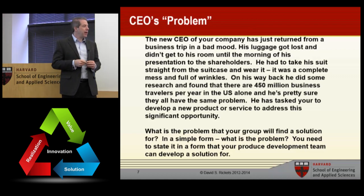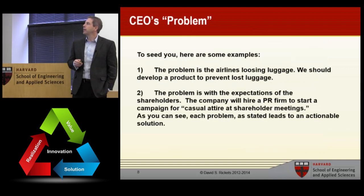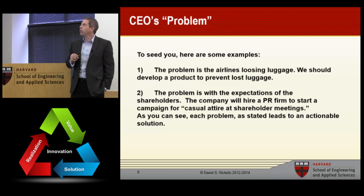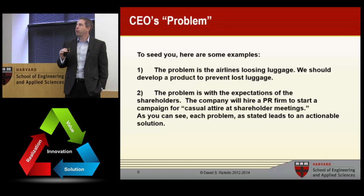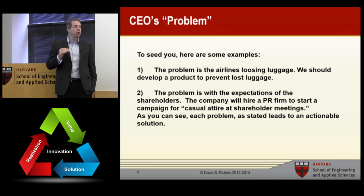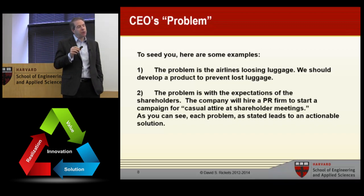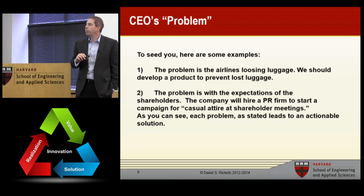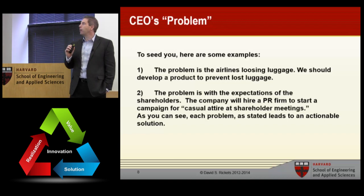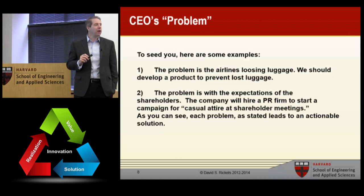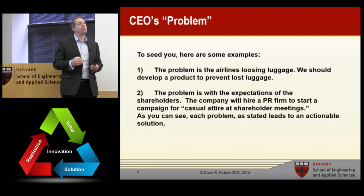We sent this out to everybody ahead of time and got your feedback back. I did seed everyone with two examples. One possible way of posing the problem: the airline is losing luggage, so develop a product that prevents lost luggage. The second example: the problem is with the expectations of shareholders, so the company will hire a PR firm to start a campaign for casual attire at shareholder meetings. As you can see, each one of these problems as stated leads to a different type of solution.